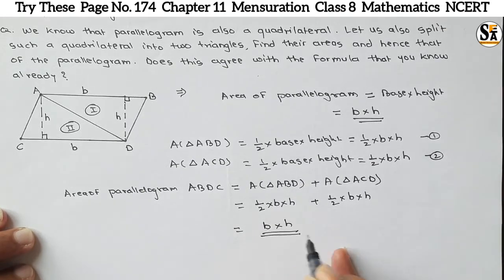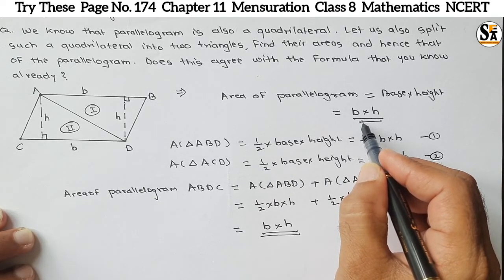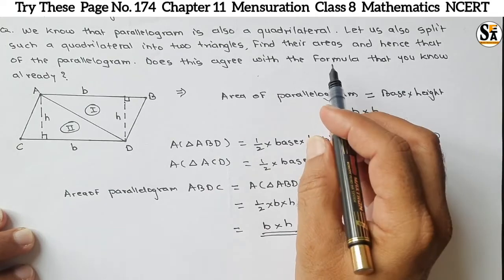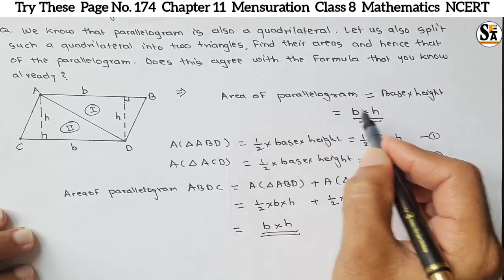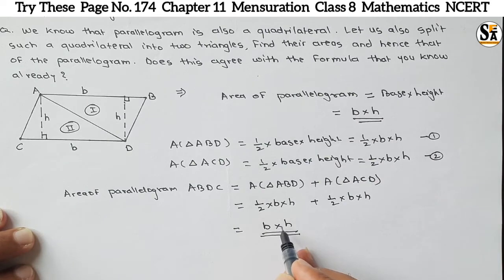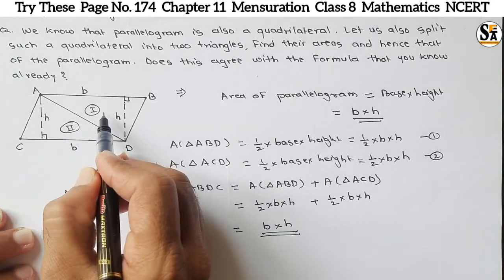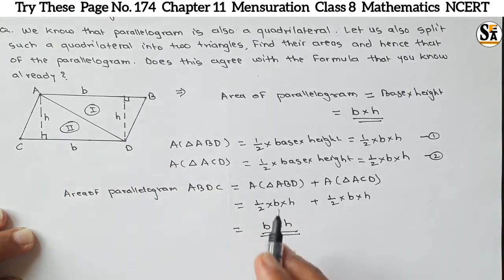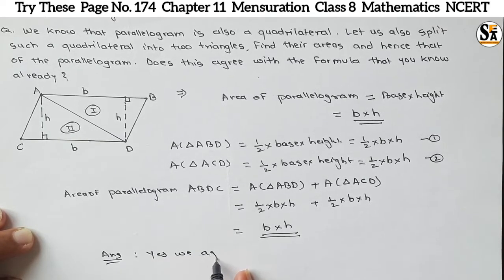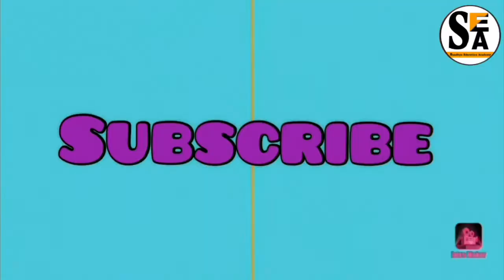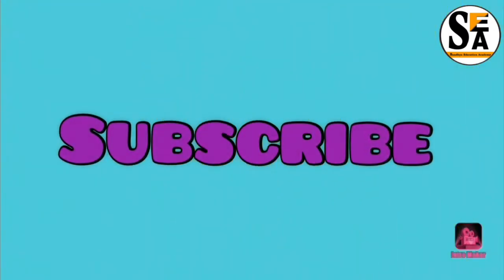We are again getting the same area — the formula for the area of a parallelogram. So does this agree with the formula that we know? Yes, it does. We know the formula that area of parallelogram is base into height, and here we proved that the sum of the two triangle areas also gives B into H. So our answer is: yes, we agree. This is all for this video. Do learn, do enjoy — thank you.